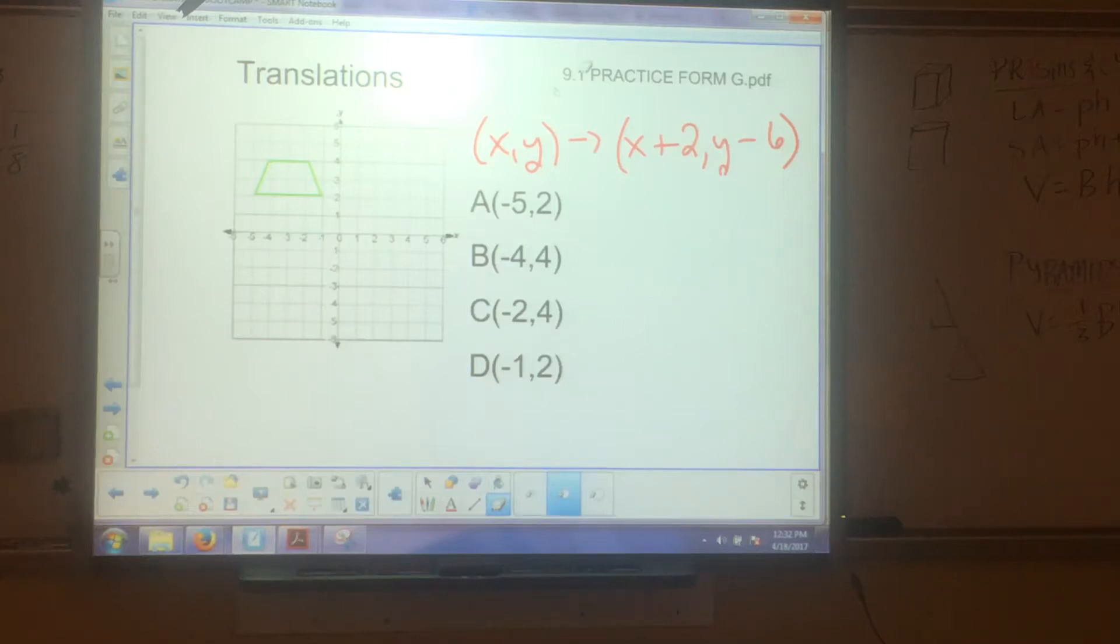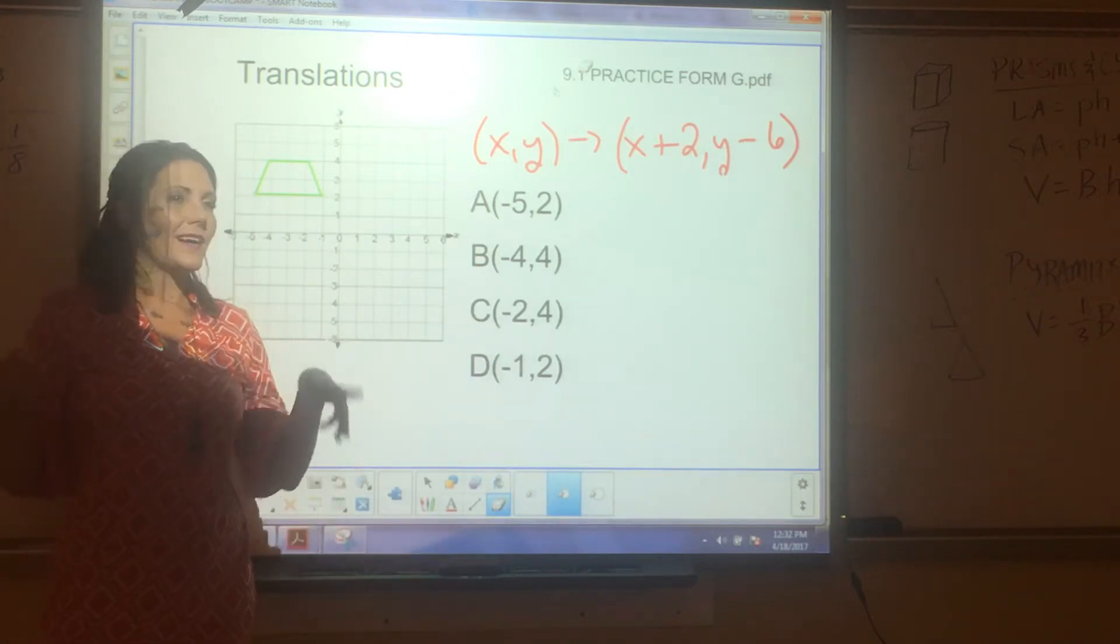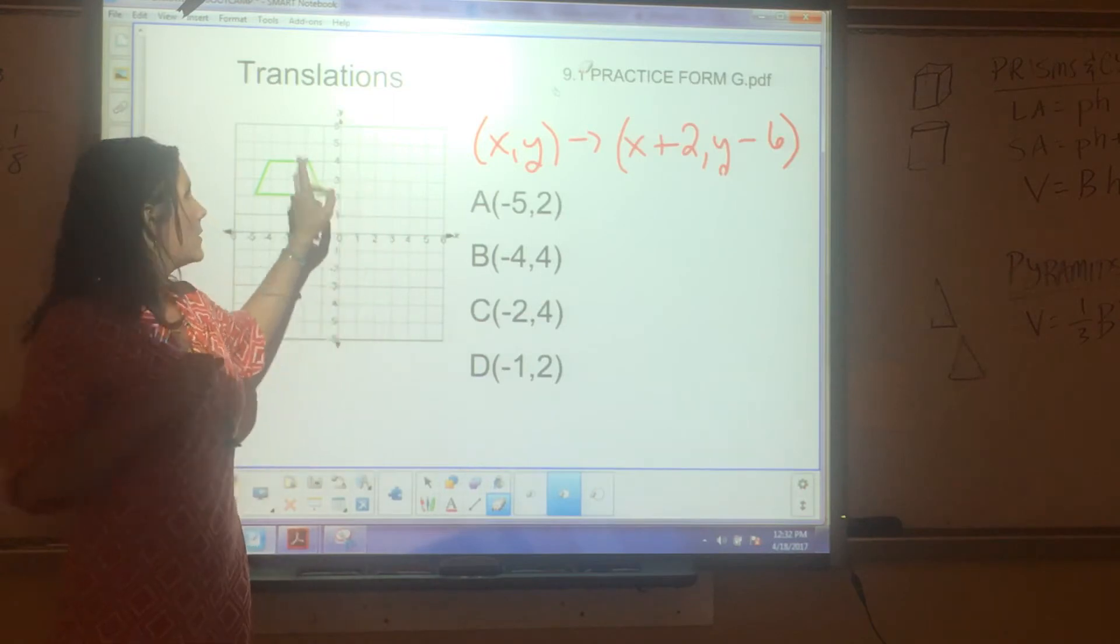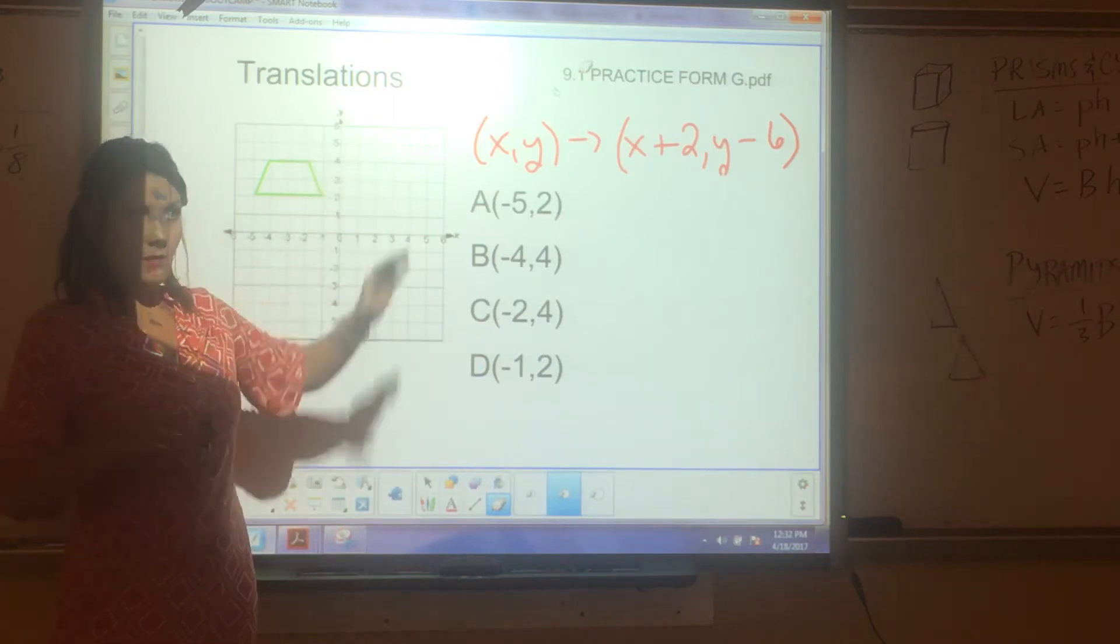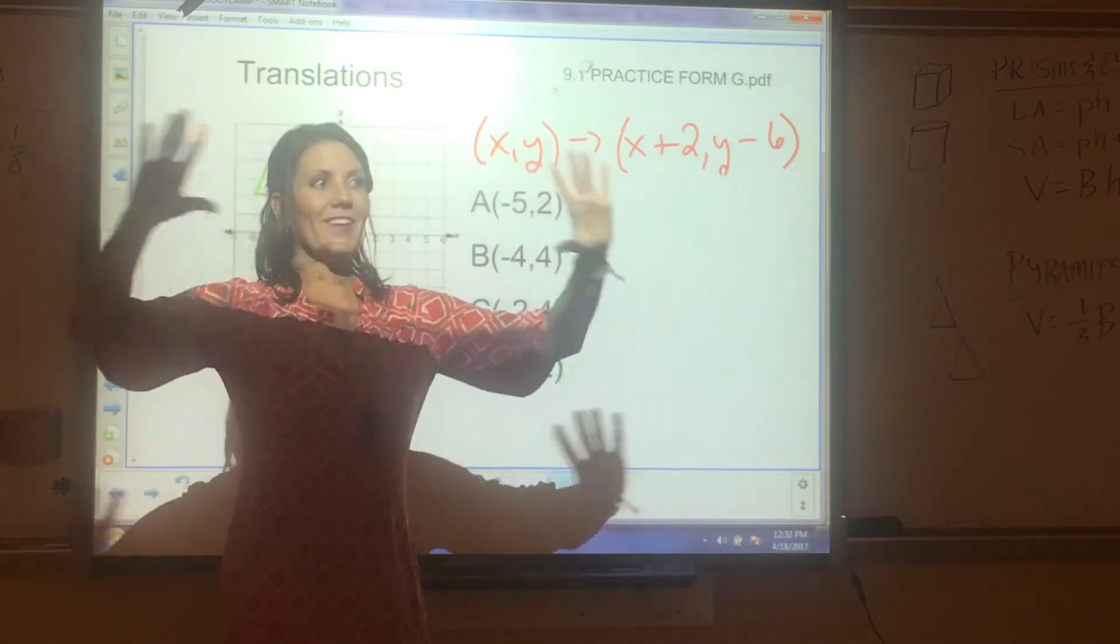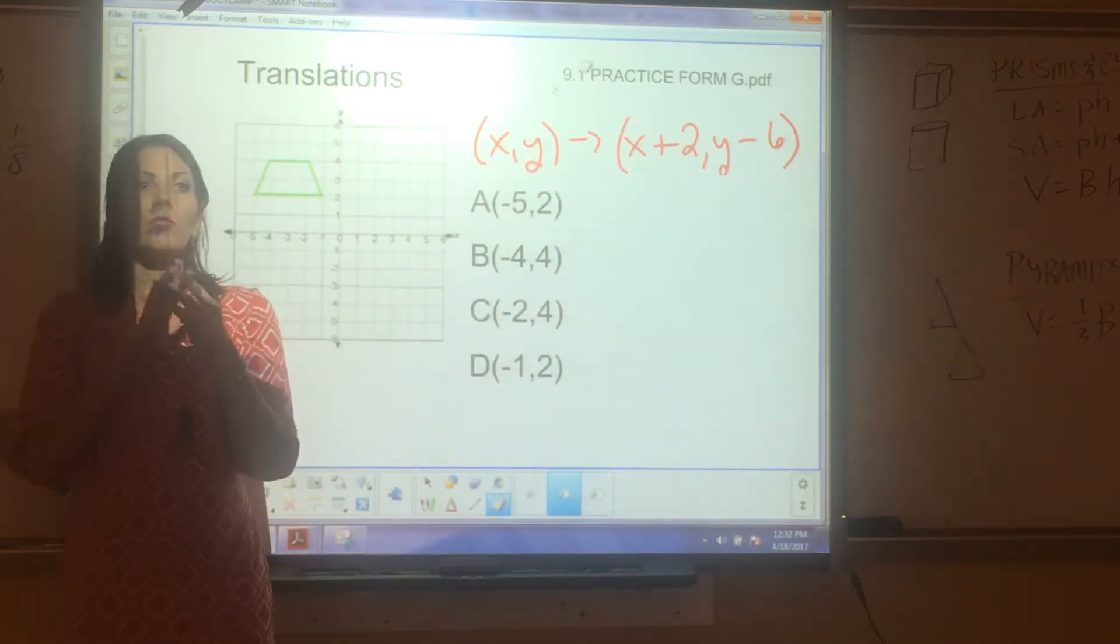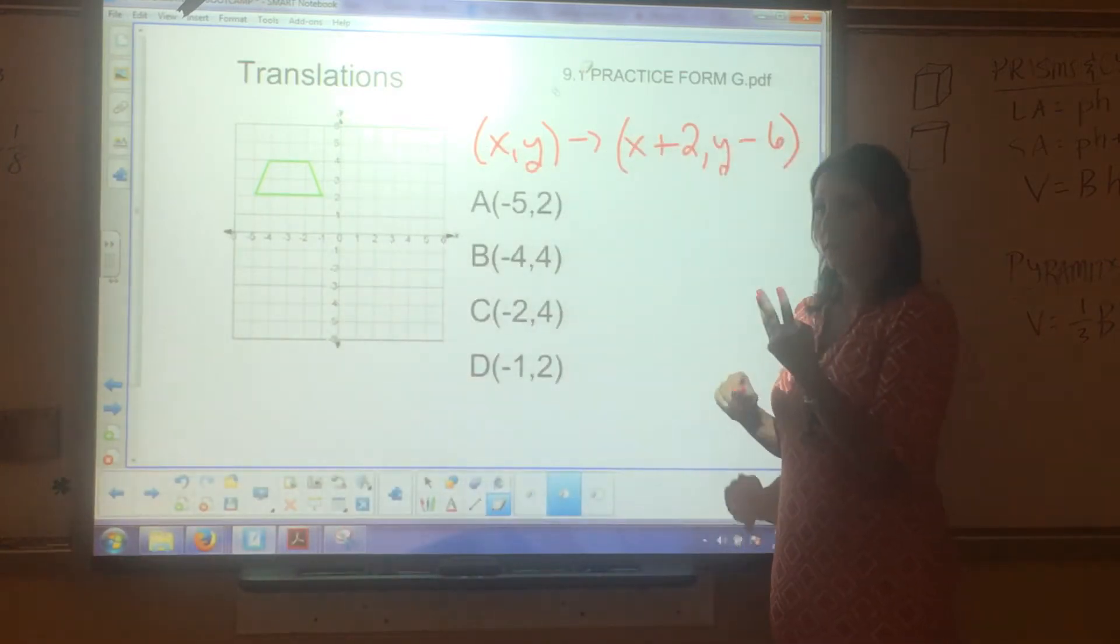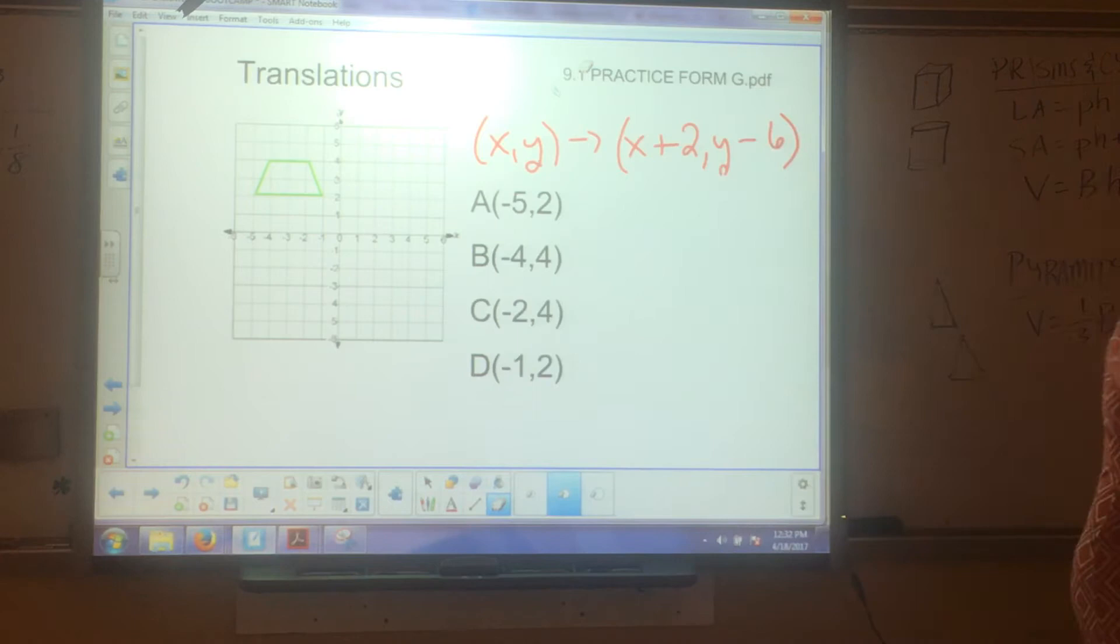Alright, so transformations. There's four types. We have translation, reflection, dilation, rotation. Now, three of them are isometries or rigid motions. What do we mean by that?